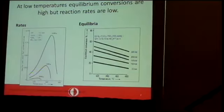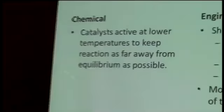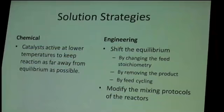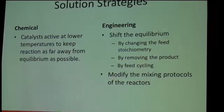What are the solution strategies? The chemical perspective could give us catalysts that are active at lower temperatures in order to keep reaction as far away from equilibrium as possible. We can use tools that we have accumulated from our engineering background. We may shift equilibrium by changing the feed stoichiometry, by removing the product, or by feed cycling which I will be talking about in detail. In other words we can modify the mixing protocols of the reactors.